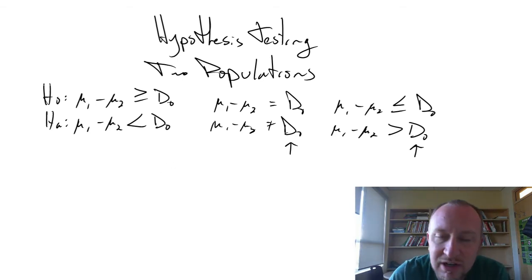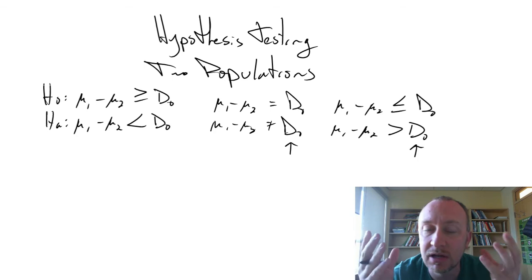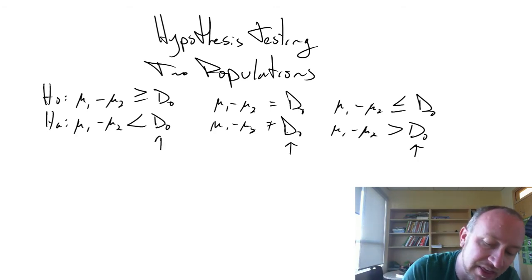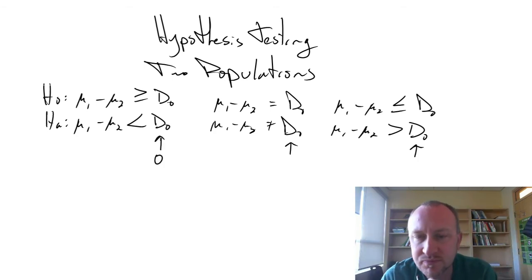If all we are looking for is to see that one is somehow different from the other and we're not looking for any specific magnitude of difference, then this can just take on a value of zero. Okay, so we'll have these three different tests and we'll go through examples of a couple of them.